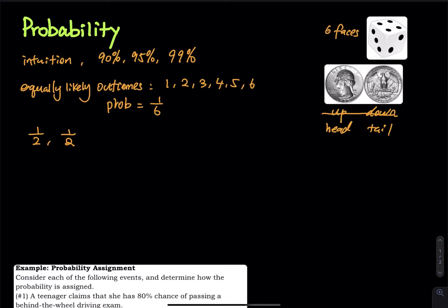Let me give you one more example. In a multiple choice problem, you get A, B, C, and D. Let's say you have no idea which answer is right. You pick one randomly. What is the probability that you get the problem right by chance? The probability that you will get the answer correct is one over four — there is one right answer out of four choices. The probability that you will get the problem wrong is three over four.